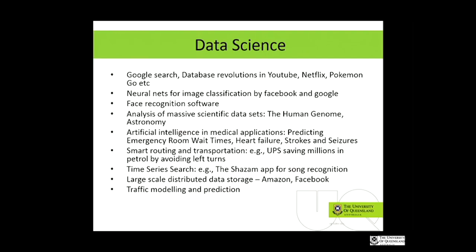These are some of the classic examples where data science has changed the way we do things and revolutionised our world. Obviously Google search, the database revolution, YouTube, Netflix. Neural nets are used for image classification by Facebook and Google. Face recognition software — to a mathematician, it's an eigenvalue problem, and there are deep mathematical and statistical ideas behind that.